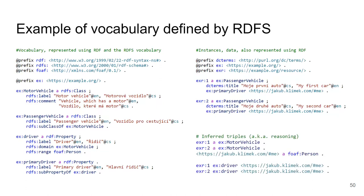Some triples are explicitly stated in data while others can be inferred from the RDFS vocabulary. For instance, if EXR1 is a PassengerVehicle and PassengerVehicle is a subclass of MotorVehicle, we can infer that EXR1 is also a MotorVehicle. Similarly, if EXR1 has a primaryDriver and primaryDriver is a sub-property of driver, we can infer that EXR1 also has a driver. The same inferences apply to EXR2.